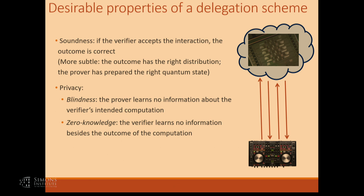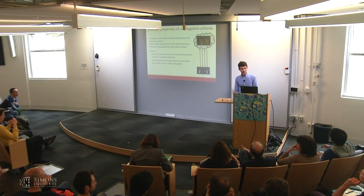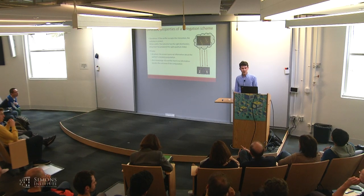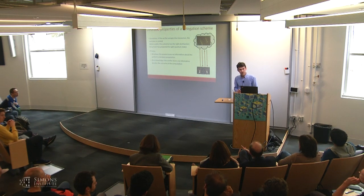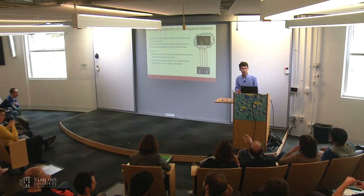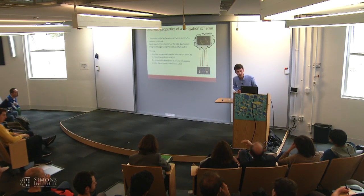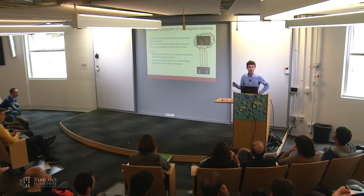When you say blindness — you don't even know what f is. Exactly. The verifier does, of course, but the prover would not know what f is. And in zero-knowledge, you could try to have both properties simultaneously — both blindness and zero-knowledge. So right now they're independent properties. What I'm saying is that blindness means the prover has no idea what the verifier is requesting but will still perform it. And in addition, you can put a constraint on the verifier too.